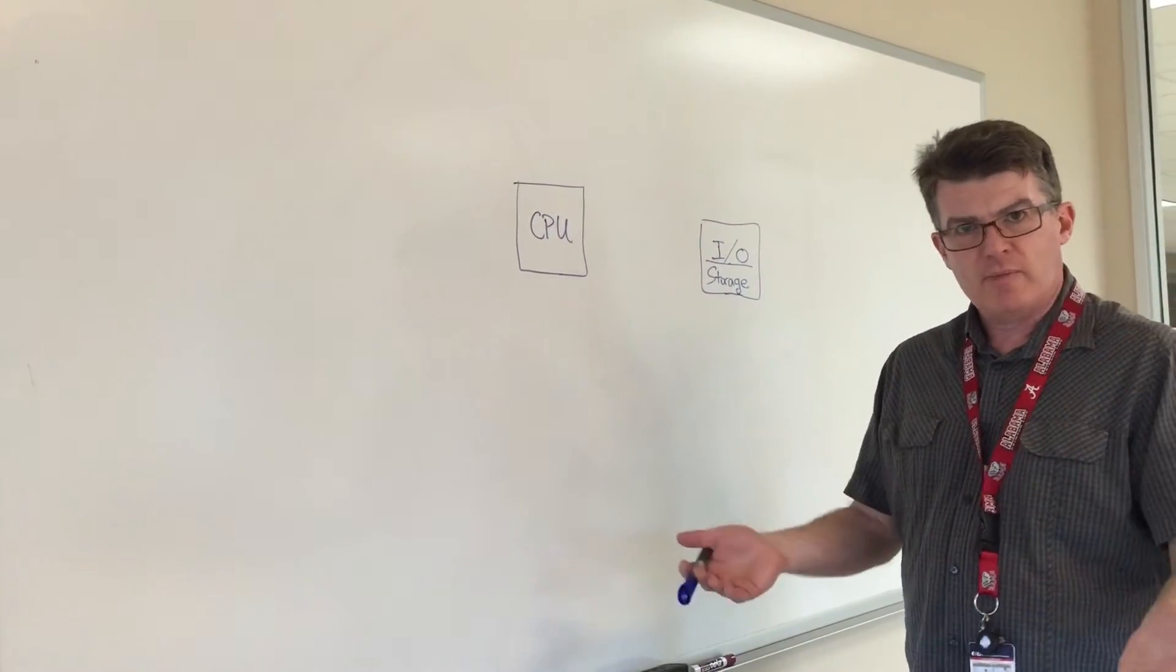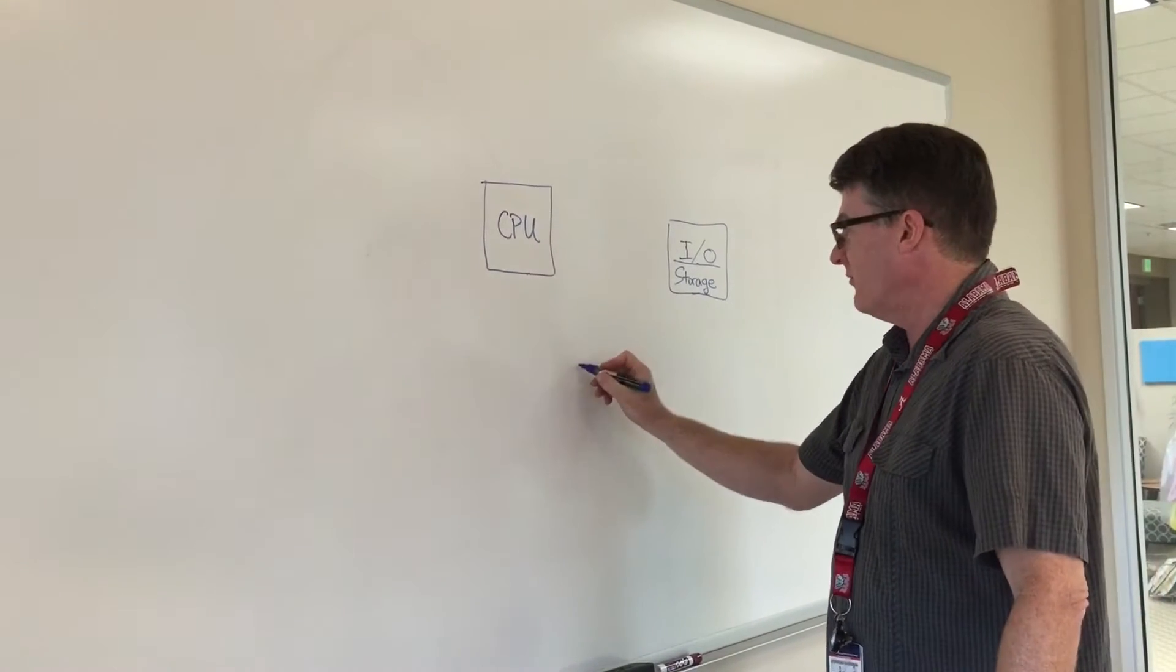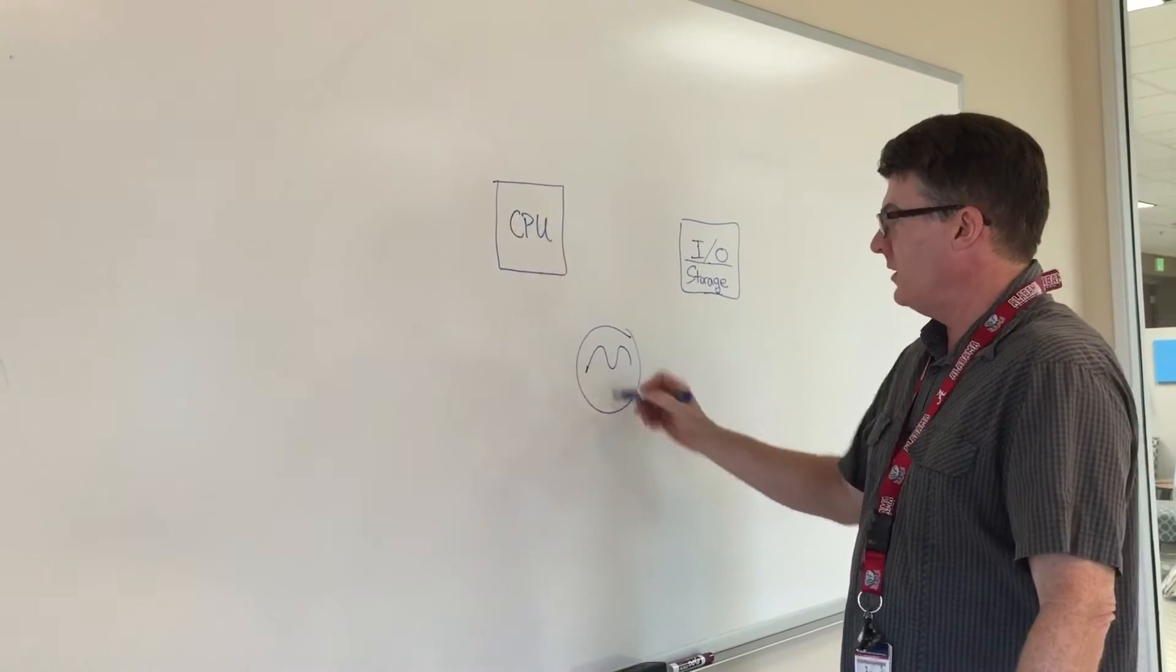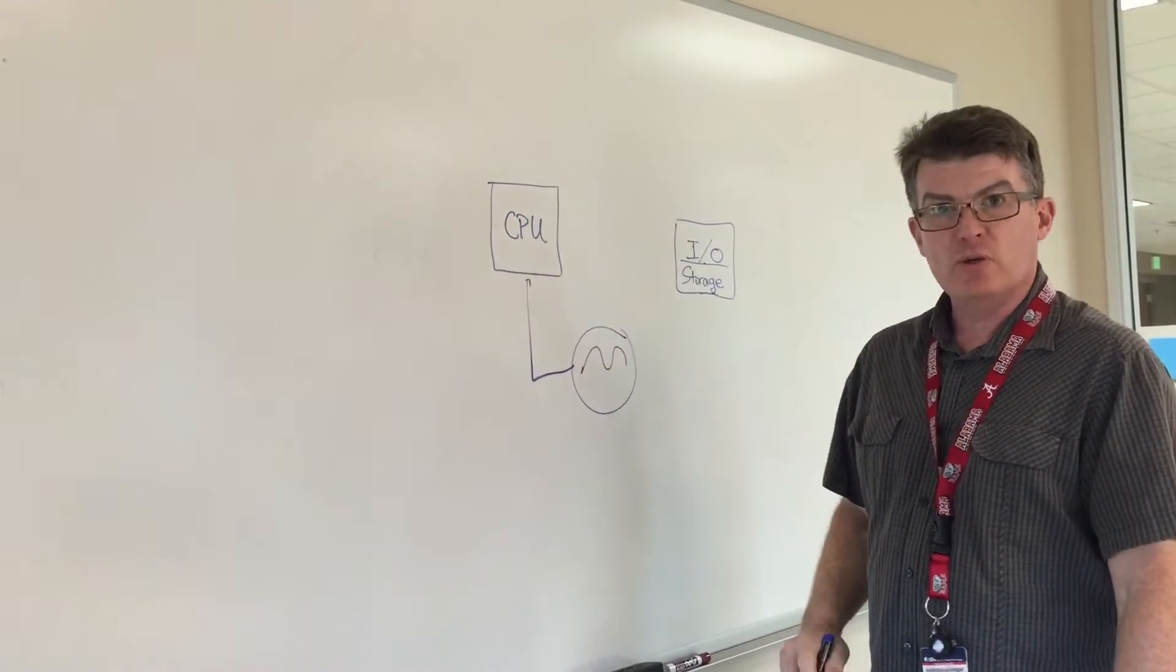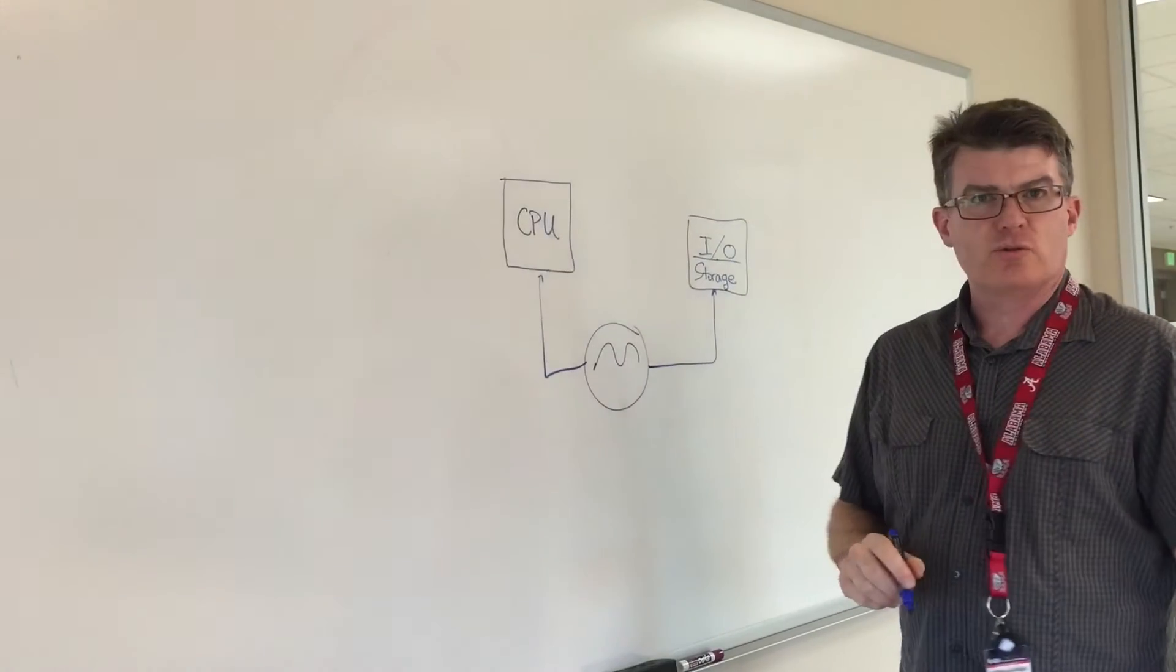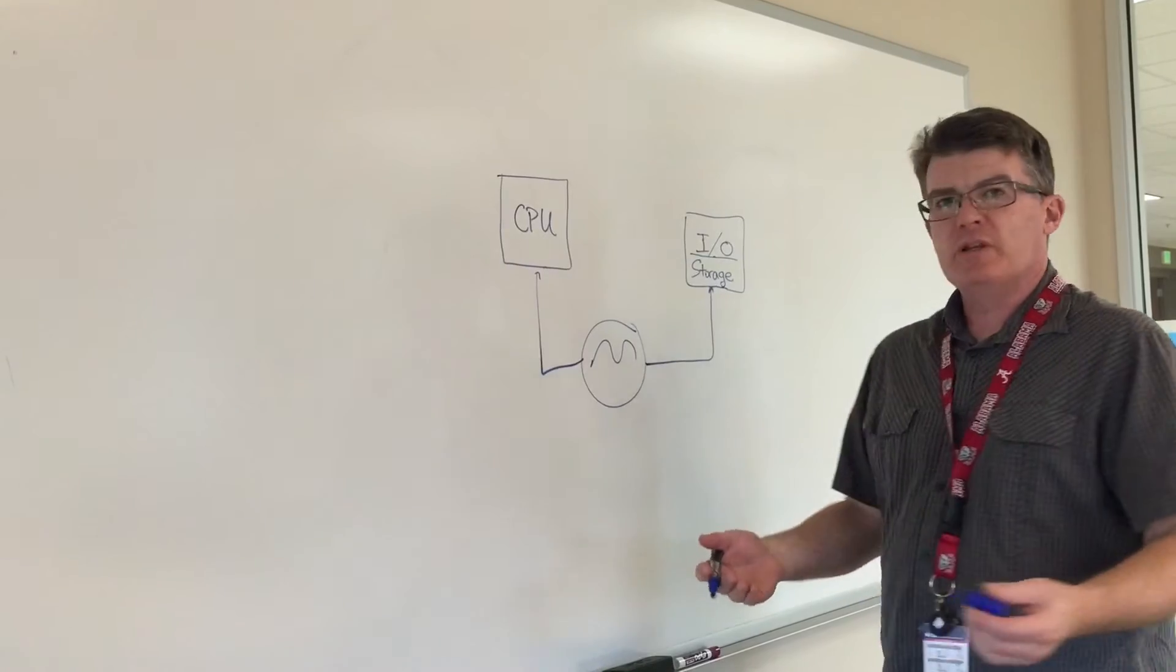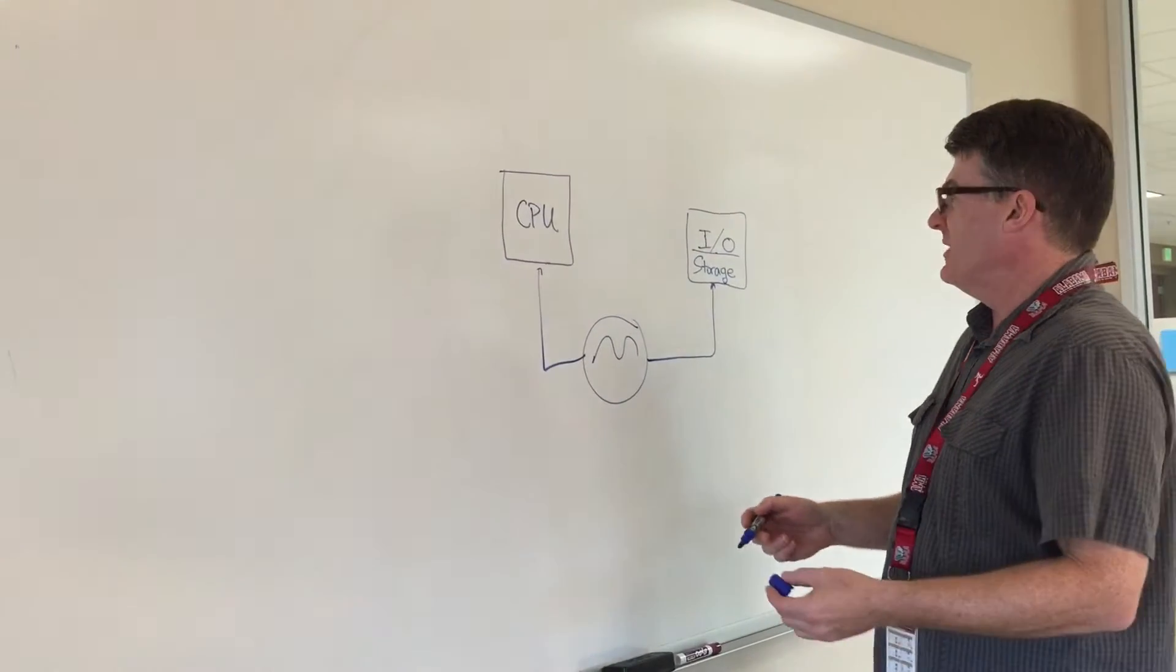There's what's called a common clock architecture, which was the original architecture for which PCI Express was defined. Common clock, as you would imply, means there's one clock that services, for instance, the CPU over here, and that same clock also services, let's say, I.O. or storage. This is great. It's the original architecture for which PCI Express was defined. However, it does have a couple of limitations.